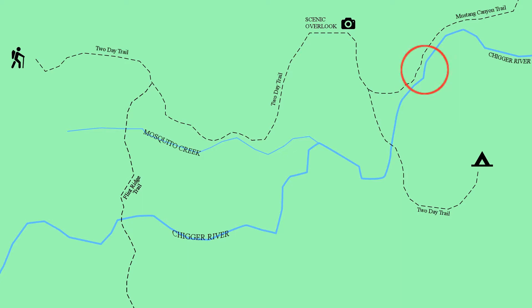Again, if you have passed the scenic overlook and you're looking to cross the river, and you find yourself following the river, using the river as a handrail to the right, you know that you're on Mustang Canyon Trail. So you need to backtrack and find your correct trail, the Two Day Trail, to the campsite.